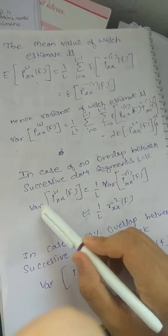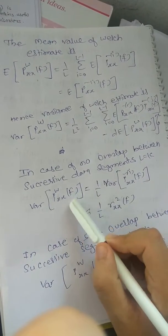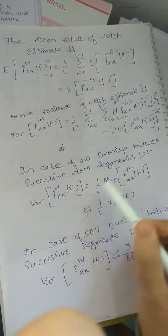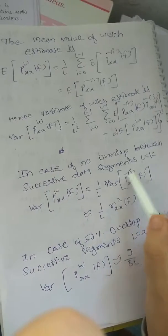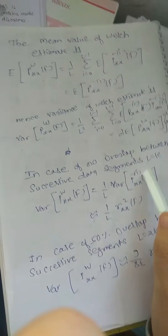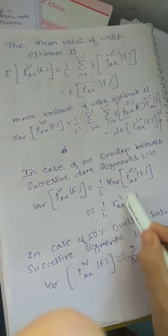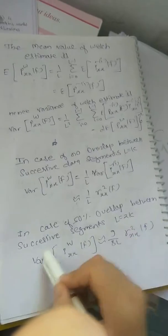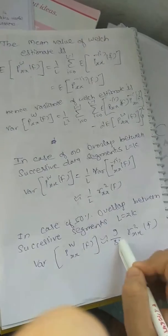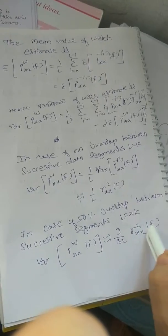Variance P_xs_omega(f) expected: 1/L variance P_xs_i(f). In case of 50% overlap between time axis segments, L = 2K: 9/8L times xs(f).